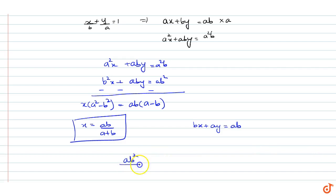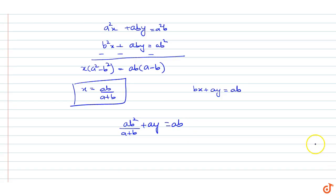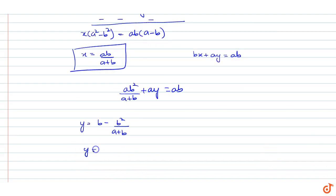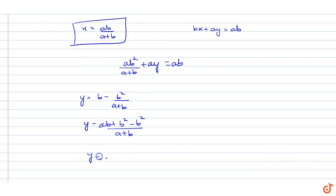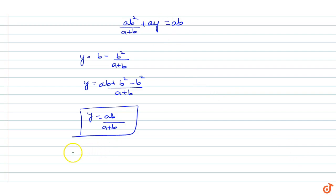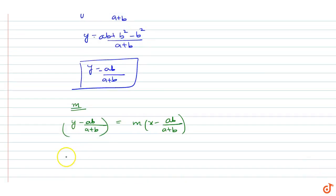Substituting back gives ab²/(a + b) + ay = ab, so y = ab/(a + b). Now, taking the line through this intersection point with slope m: y − ab/(a+b) = m(x − ab/(a+b)), which simplifies to mx − y = ab(m−1)/(a+b).